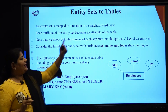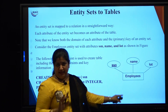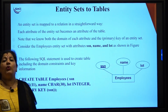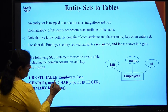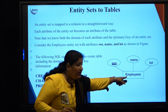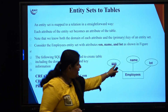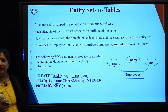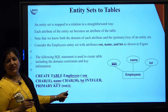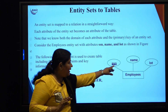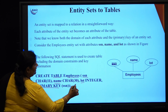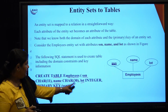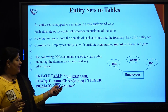The first and simplest step is converting entity sets to tables. For example, 'Employees' is an entity set with three attributes: SSN number, name, and lot. To convert this, we create a table named 'Employees' — the entity name becomes the table name — and each attribute becomes a column in the relational table. The underline indicates the primary key, which is why we have the primary key constraint here. Converting entity sets to tables is a straightforward thing.